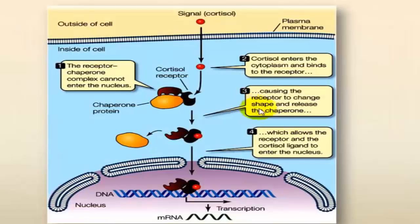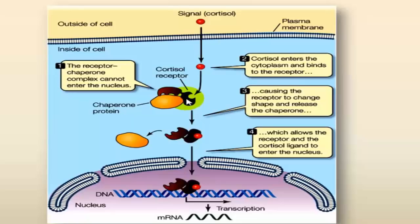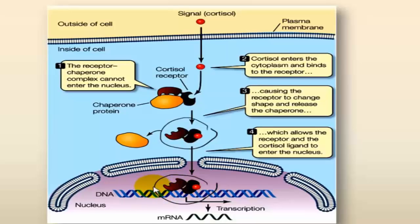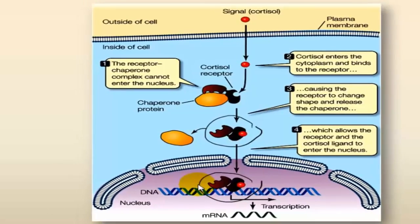The third type of cell response involves changes in the level of gene expression. The example here is that of lipid-soluble signals that diffuse into the cytoplasm, bind to their cytoplasmic receptor, and form a complex that is transferred to the nucleus to act as a transcription factor, resulting in the formation of specific proteins.